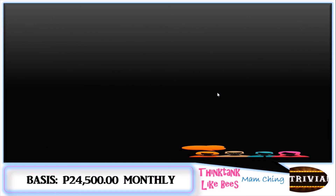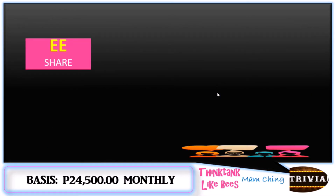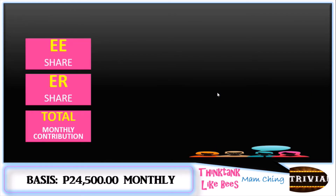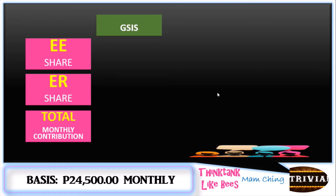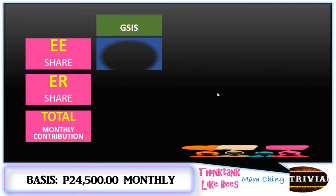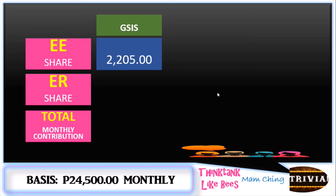So here's the sample: EE plus ER equals total monthly contribution. For the GSIS, you compute ₱24,500 times 9 percent, which gives ₱2,205.